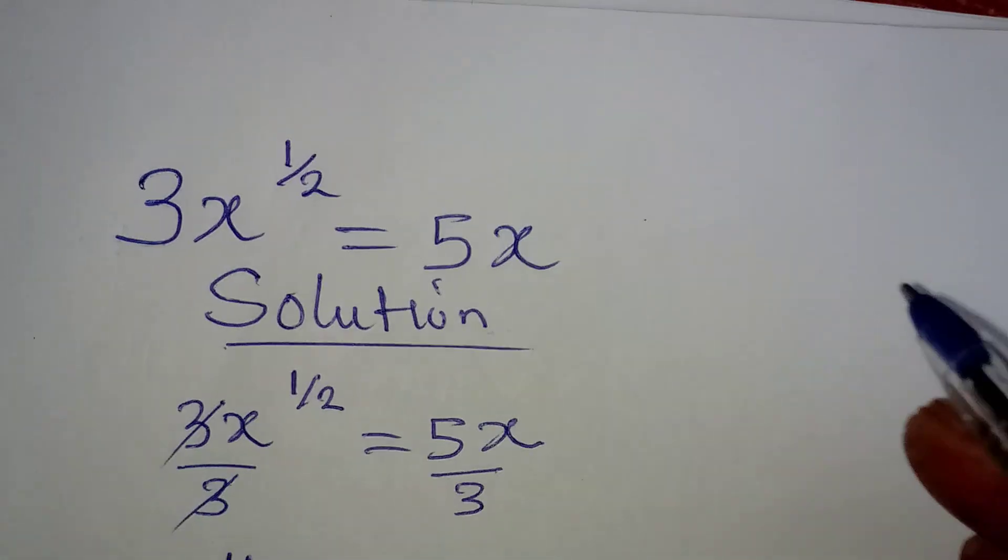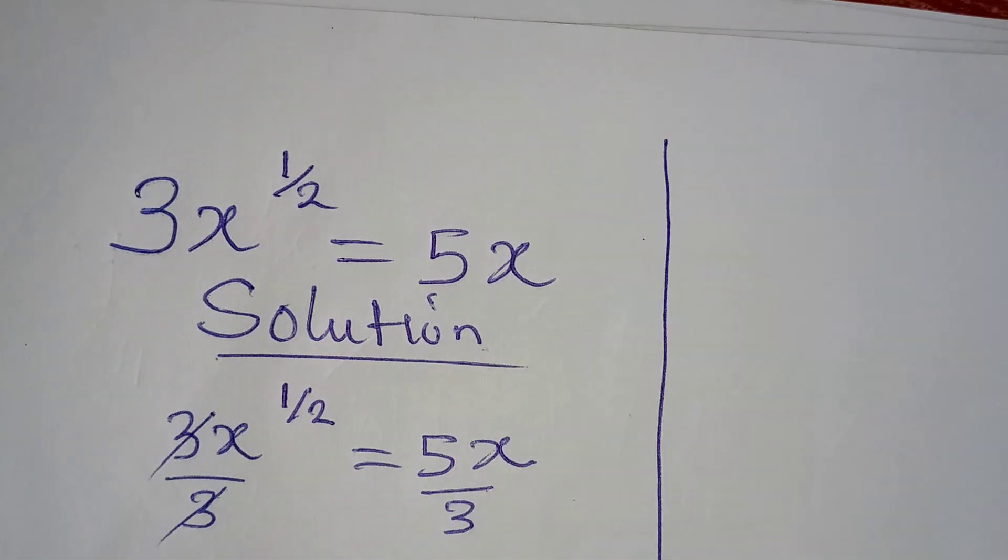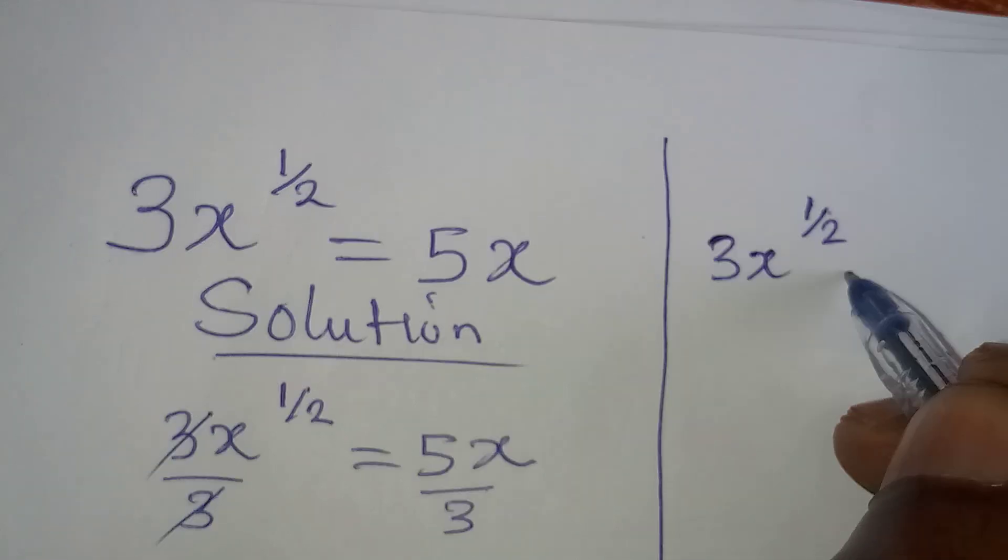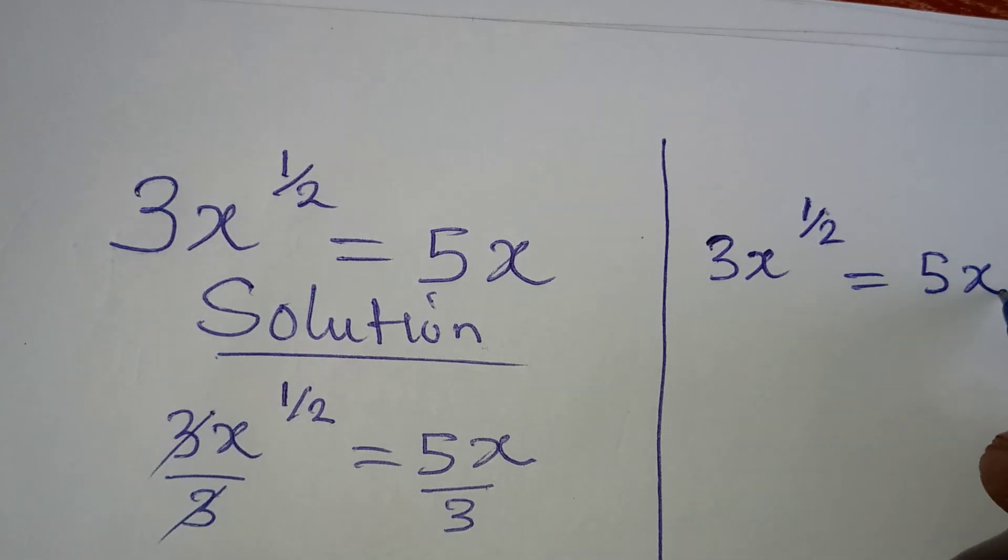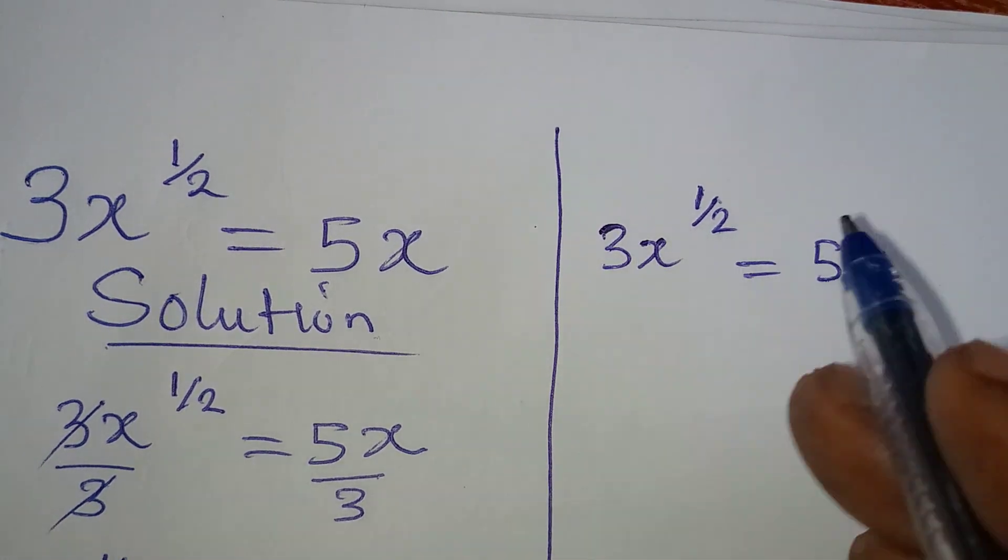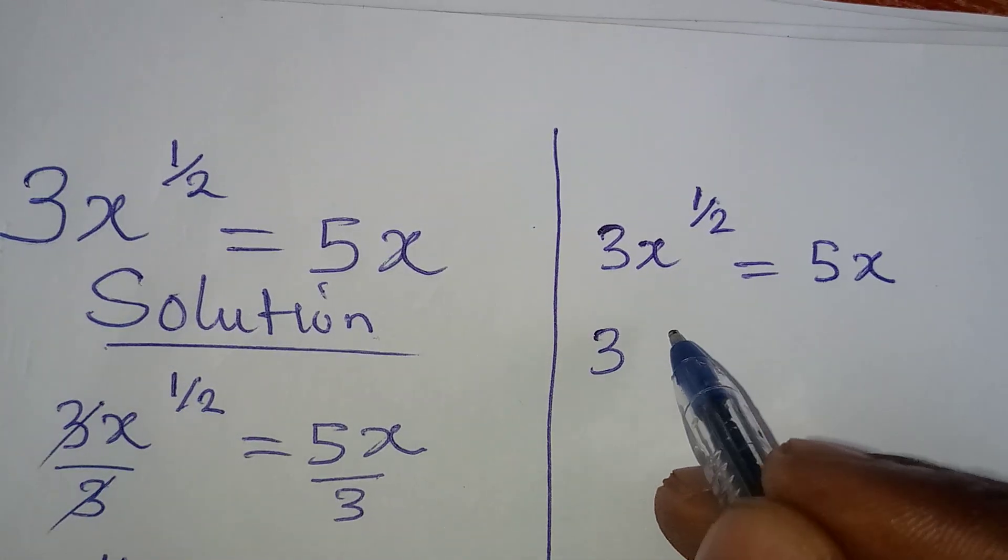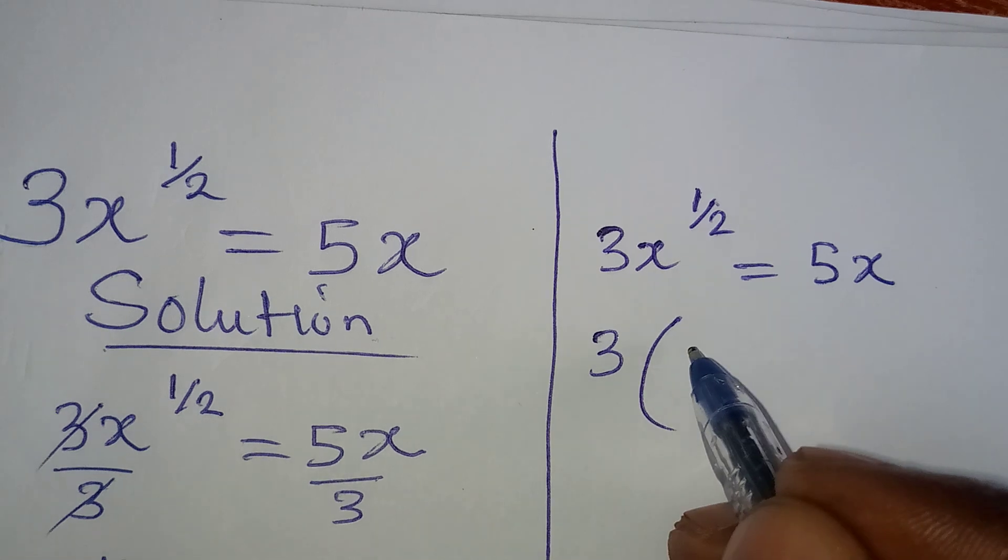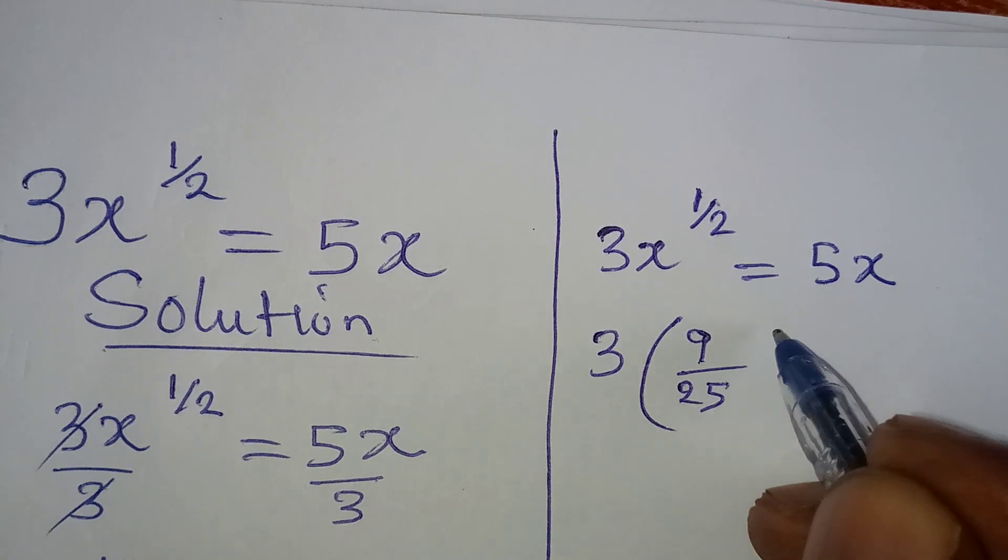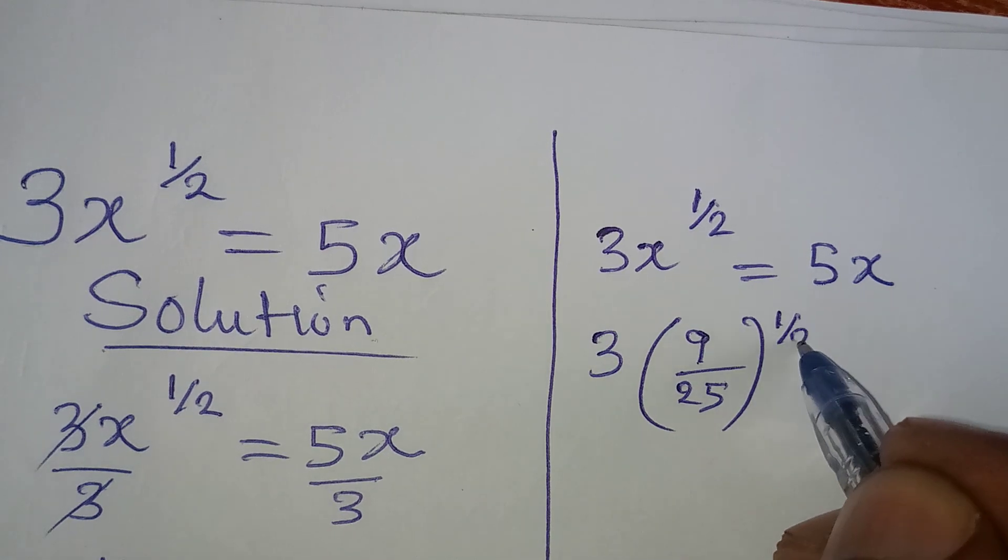This is the equation, the original equation given to us. We have 3x to the power of 1 over 2 to be equal to 5x. Now, let me deal with the left-hand side here. That would be 3 multiply by x is now 9 over 25 raised to the power of 1 over 2.